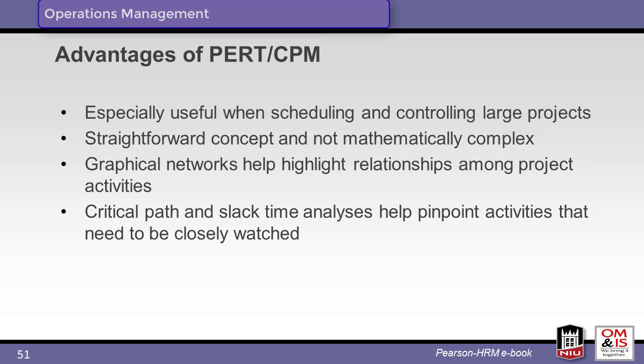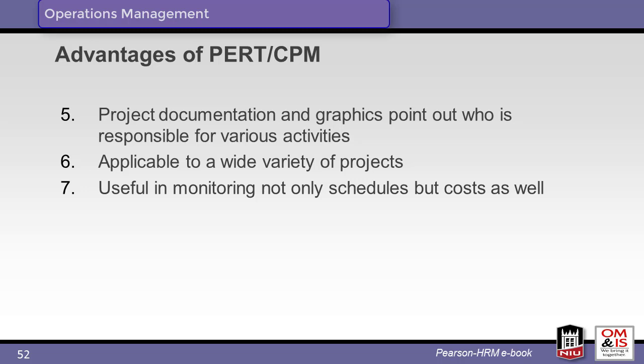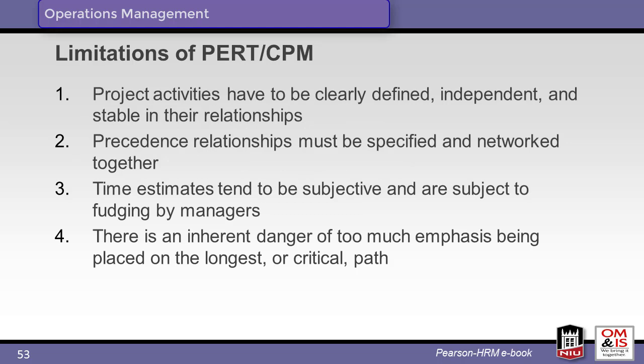Managing a project using PERT and CPM has a number of advantages when working with large complex projects. These methods are not complex and result in graphical networks that offer visual clues to the project manager. Analysis of critical paths and slack time helps the manager focus on key activities. PERT and CPM also clarify accountability and can be used on most projects to effectively manage project cost and time. However, PERT and CPM do have limitations: project activities must be fully defined including durations and relationships, accurate estimates are key to success, and care must be taken to prevent tunnel vision on the critical path.